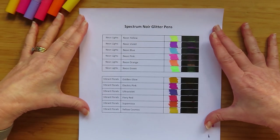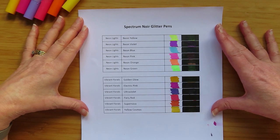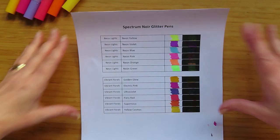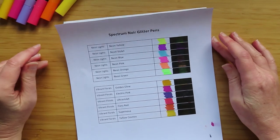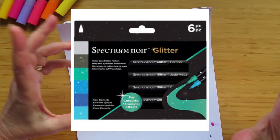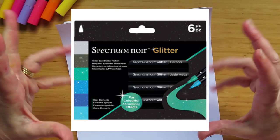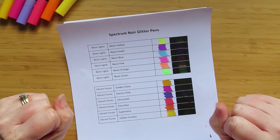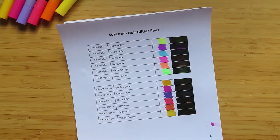That is the Spectrum Noir glitter pens. Now I think there is a third set. Let me check. Yes, there is a third set and they are called Cool Elements. I'm going to put a picture of them here. They're all the lovely blues and greens and it looks like there's a silver in them as well. And if I wasn't on a no-spend, I would absolutely purchase that set as well. Maybe I will in the future.